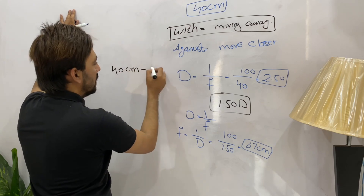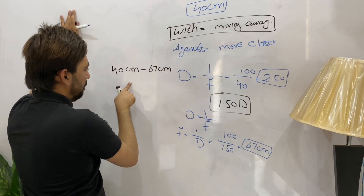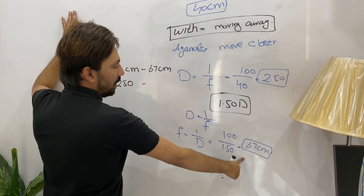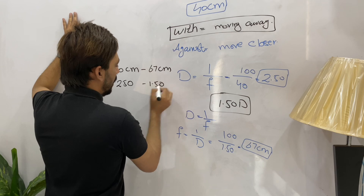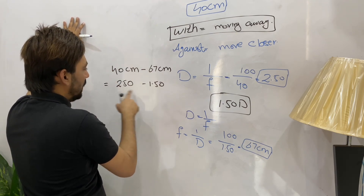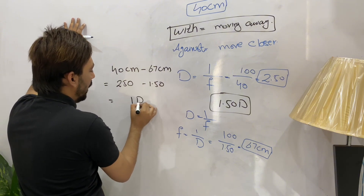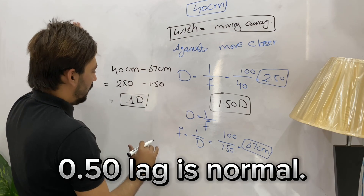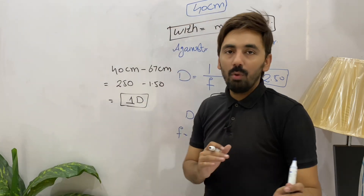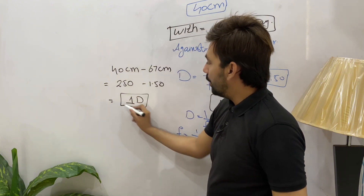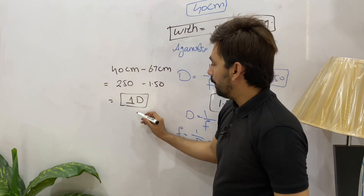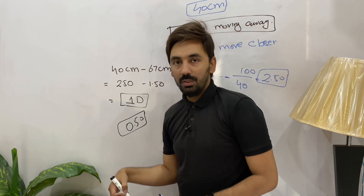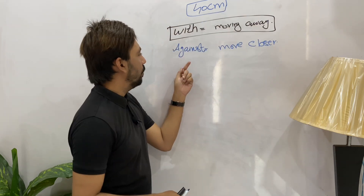Now we find the lag. Lag = value at 40 cm minus value at 67 cm, so 2.5 minus 1.5 = 1 diopter. A normal person will have 0.5 diopters of lag, which is normal. Our lag of accommodation is more than 0.5, so the lag beyond the normal 0.5 represents the actual lag of accommodation. This is how we find the lag of accommodation.